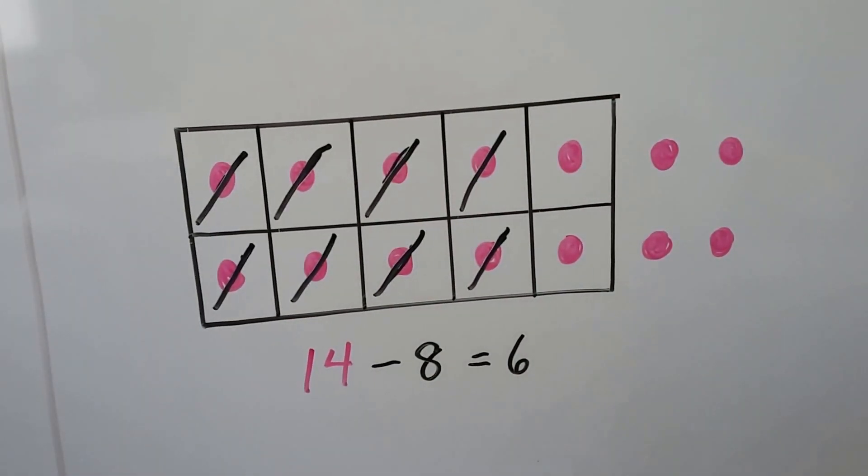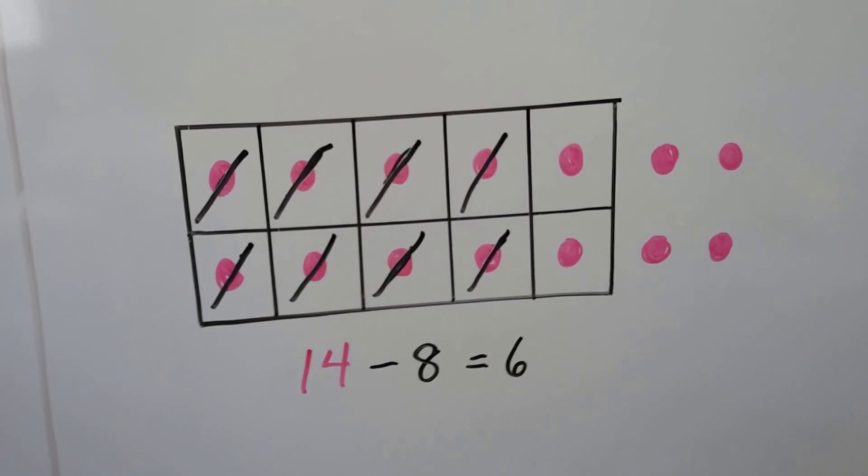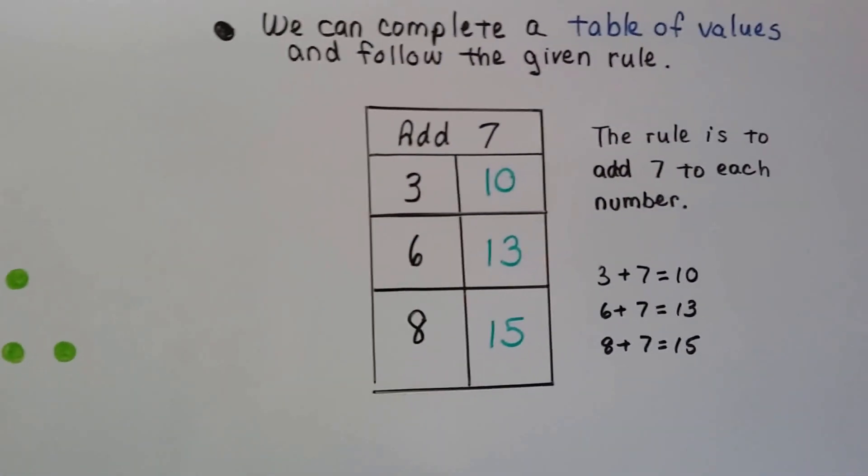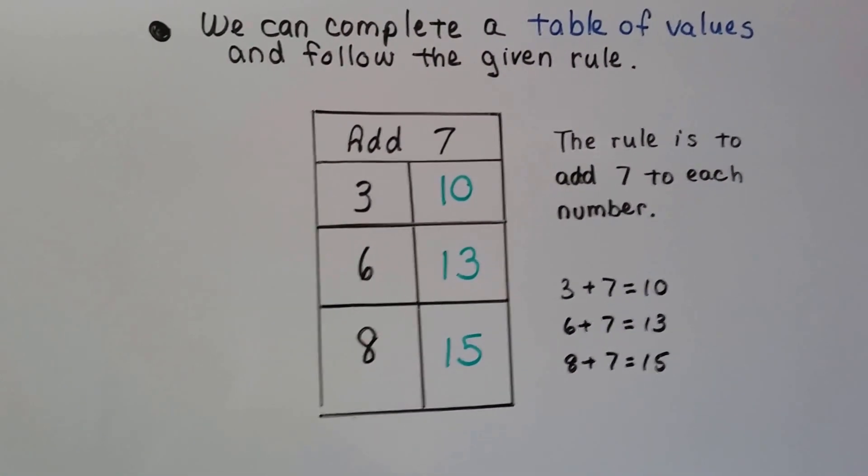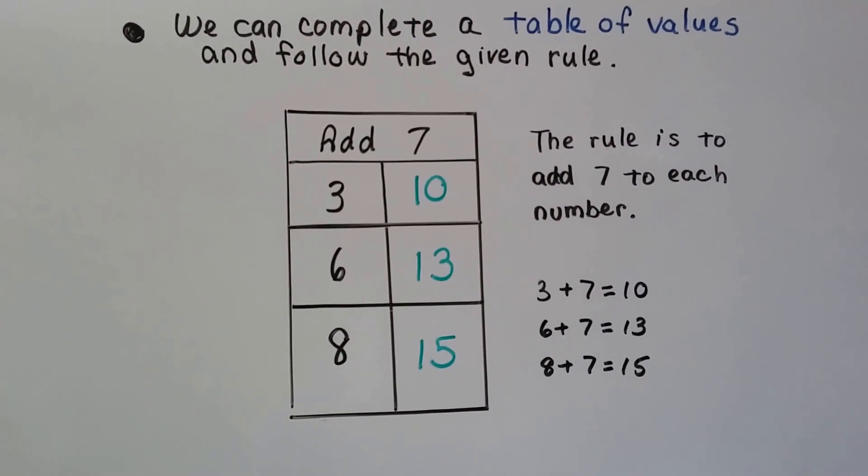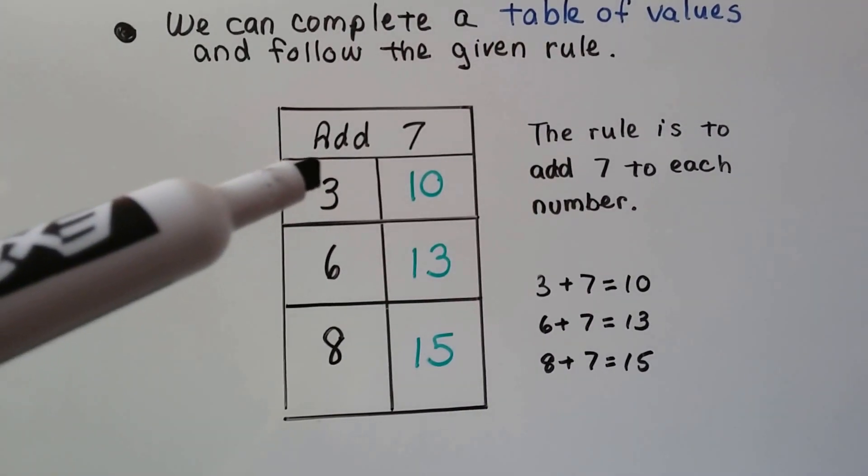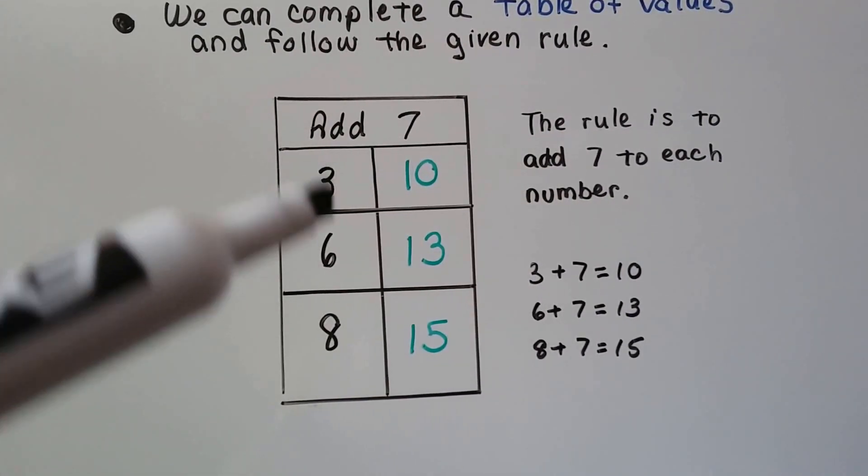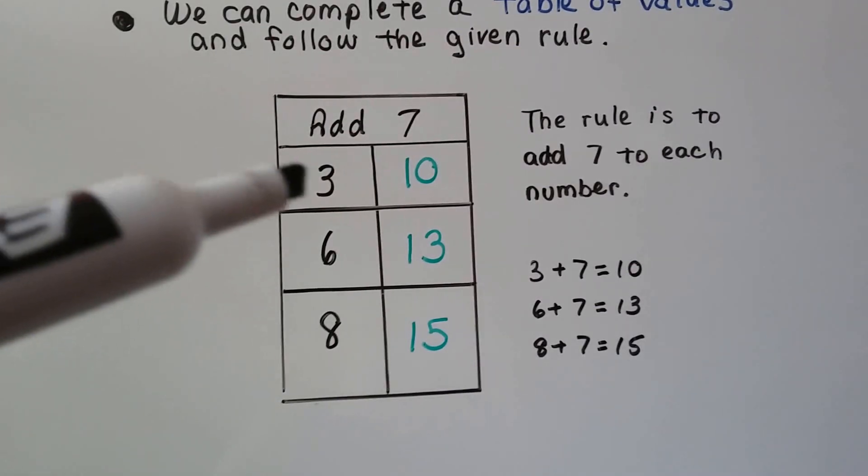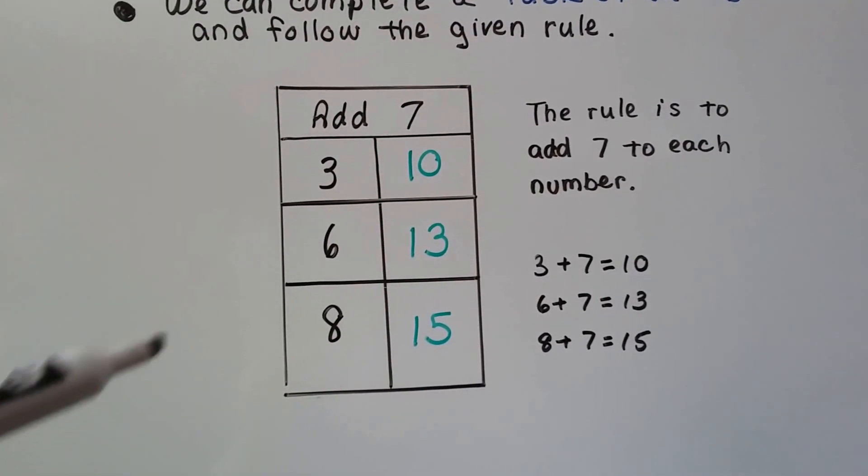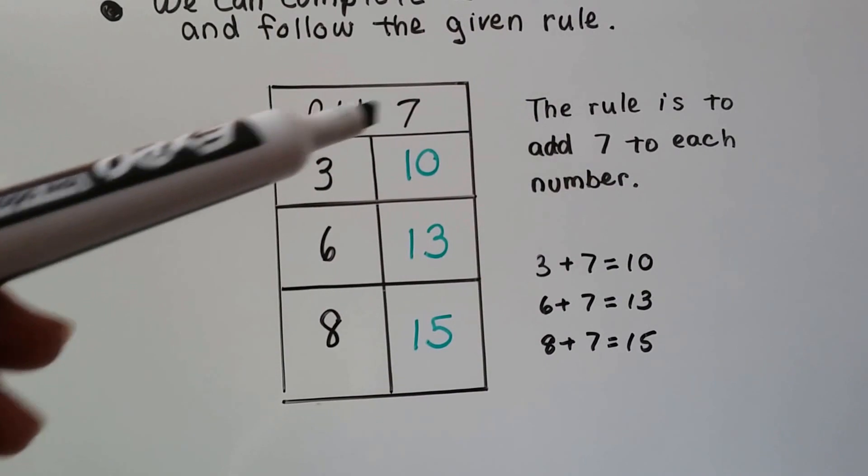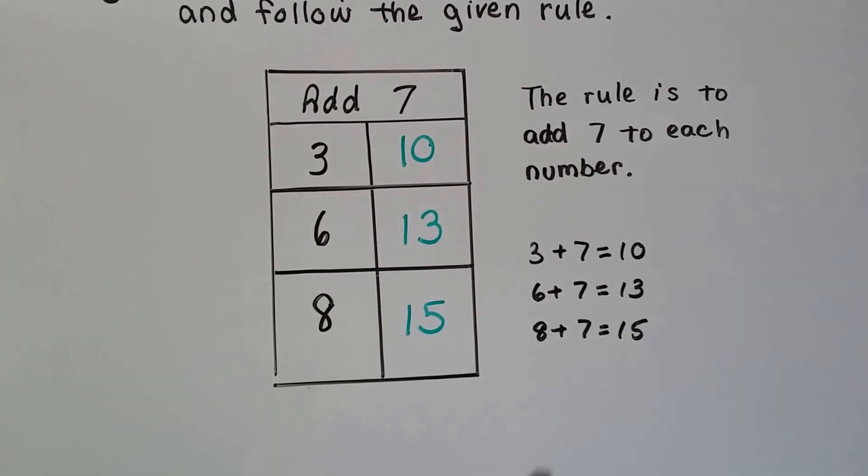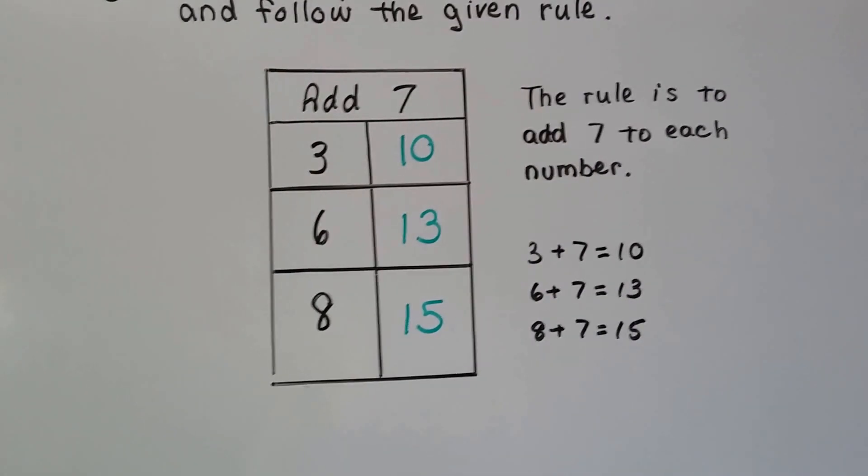We can complete a table of values and follow the given rule. The rule for this one is to add 7 to each number. We do 3 plus 7, that's 10. We do 6 plus 7, that's 13. We do 8 plus 7, that's 15. We just add 7 to each one because that's the rule.